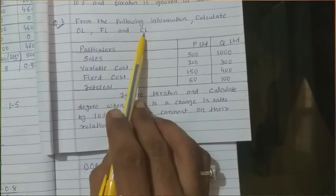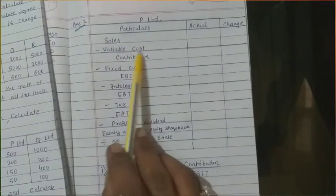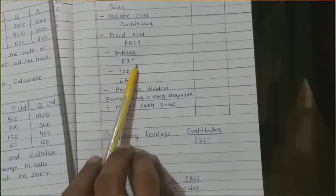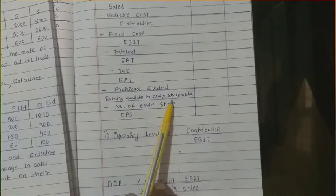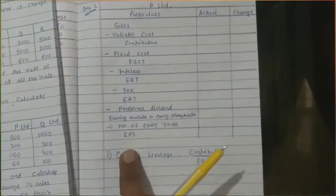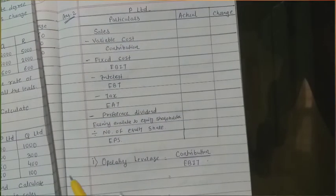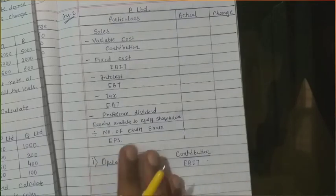For this question, remember the big table format: Sales minus variable cost = Contribution. Contribution minus fixed cost = EBIT. EBIT minus interest = EBT. EBT minus tax = EAT. EAT minus preference dividend = Earning available to equity shareholders. Divide by number of equity shares = EPS. If this format is remembered well, sums become very easy. Here we have to calculate all three — operating leverage, financial leverage, and combined leverage — plus their degrees.